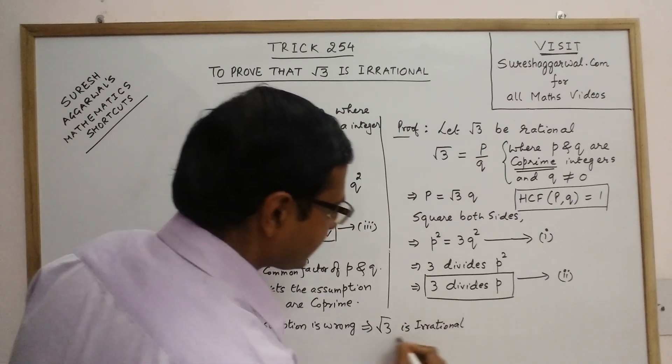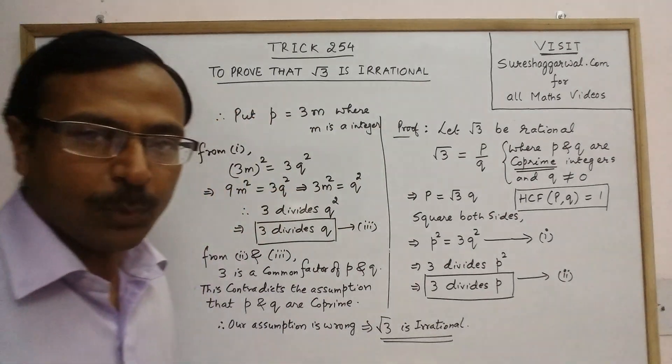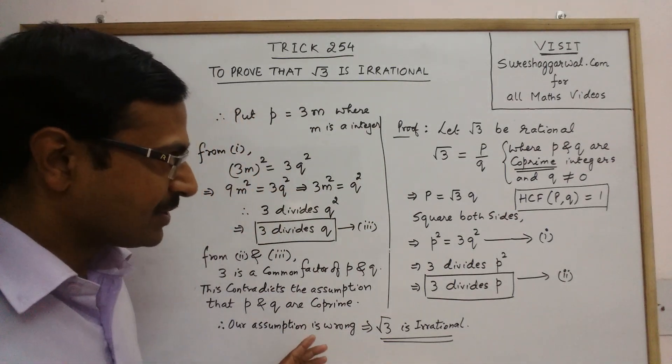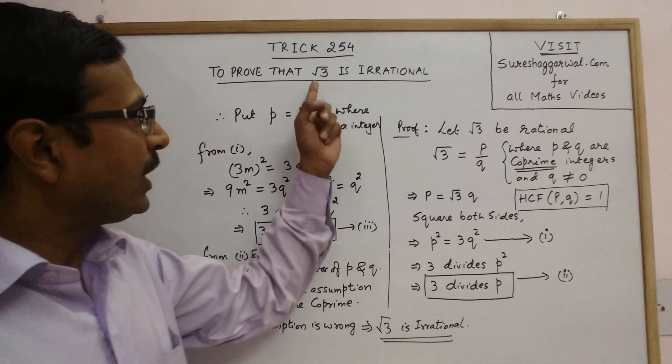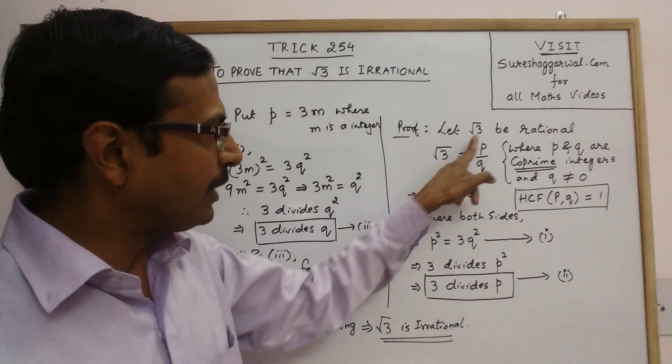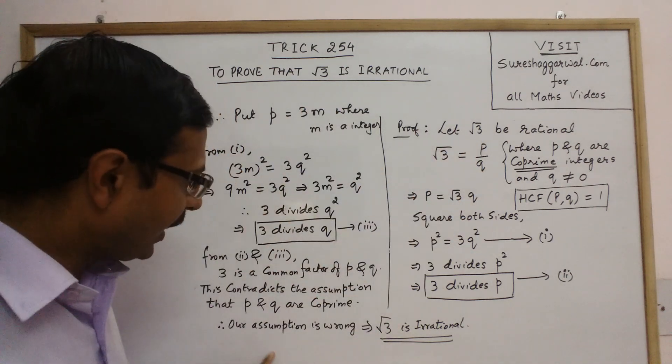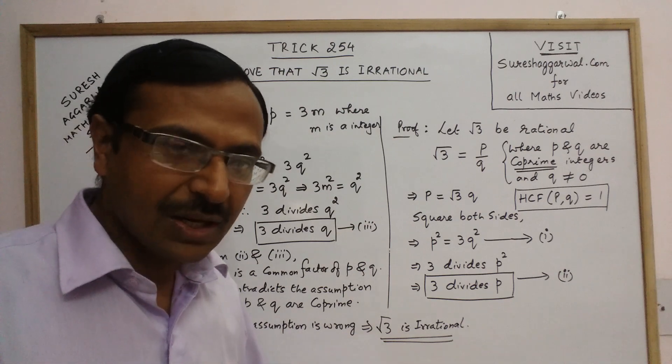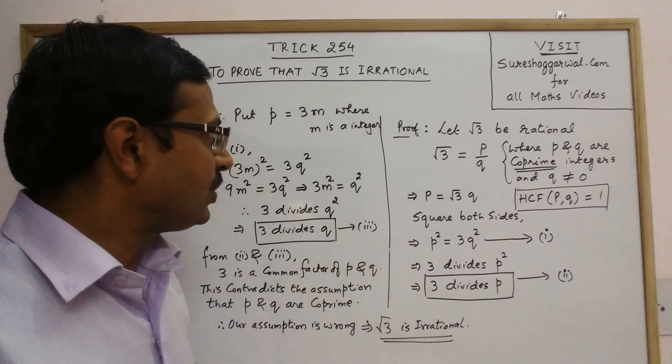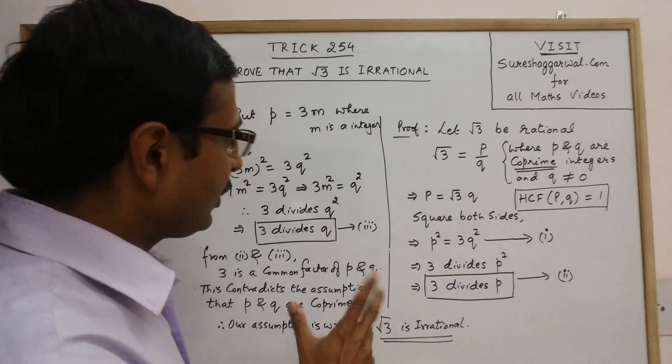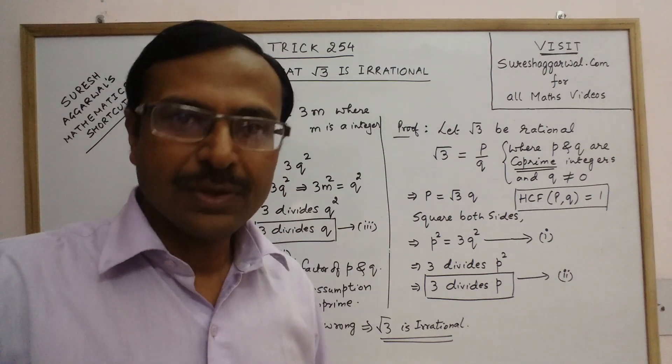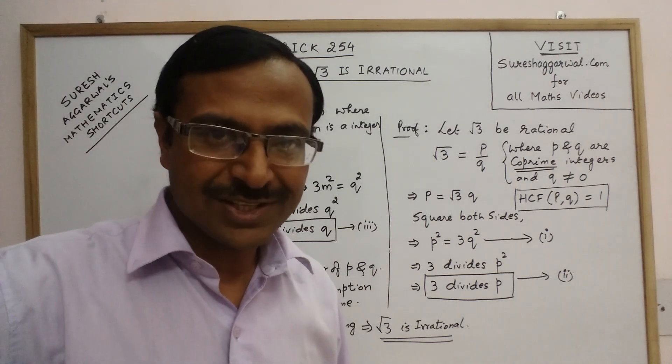So that completes the proof of this important theorem of irrational numbers. Likewise, if you get root 5, then 3 will be replaced by 5 everywhere. And you can prove that root 5 is irrational. And similar proofs can be done using this important theorem. For more videos on irrational numbers, keep sharing the videos and keep watching the channel.